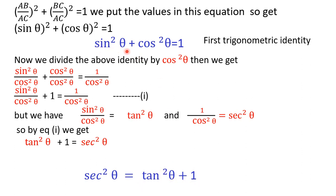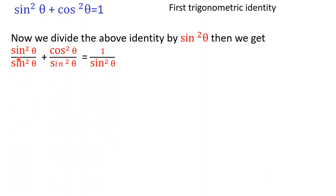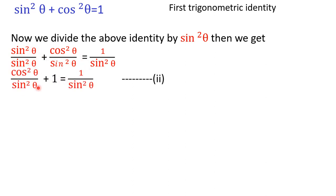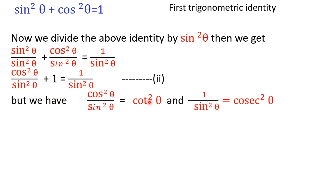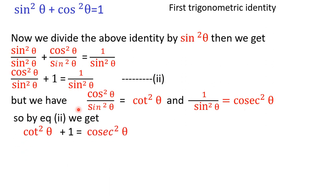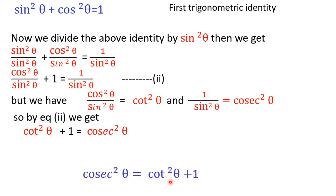Similarly, dividing sin²θ + cos²θ = 1 by sin²θ: sin²θ/sin²θ + cos²θ/sin²θ = 1/sin²θ. The first term becomes 1, giving 1 + cot²θ = cosec²θ, since cos θ/sin θ = cot θ and 1/sin θ = cosec θ. So the third identity is cosec²θ = 1 + cot²θ.